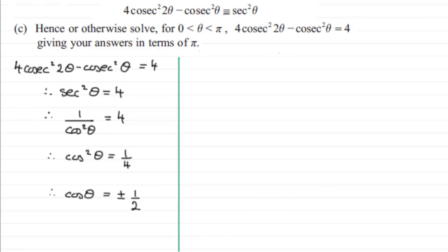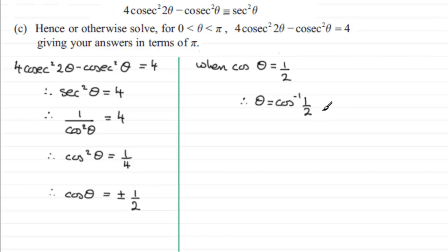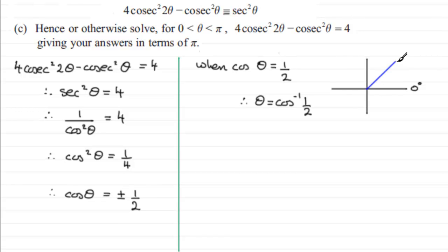We need to look at both types of solutions. First, when cos(θ) equals a half: to get θ we take the inverse cosine of both sides, so θ equals inverse cos of a half. I always use a quadrant diagram — I find them easier than graphs. Starting at zero degrees, cosine is positive in the first and fourth quadrants, so I mark two lines equally inclined to the horizontal.